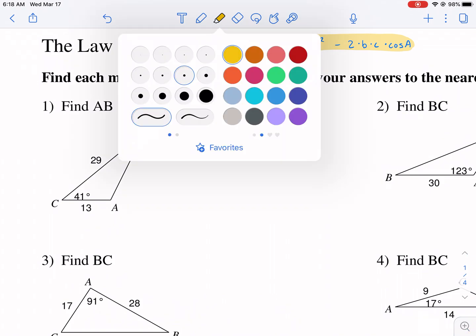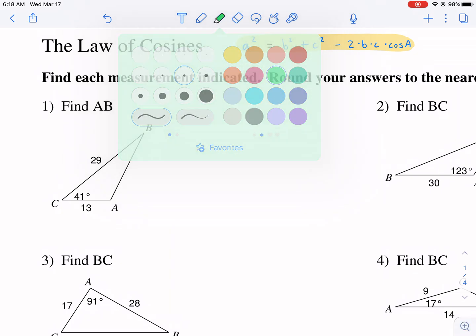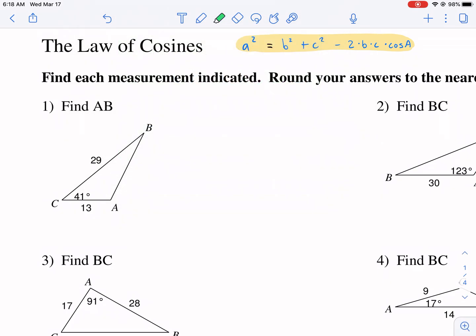What we look for is very important to how we use this law of cosines. So it says find AB, AB is this side.